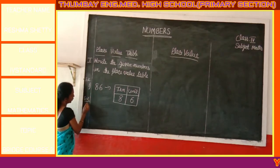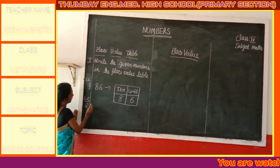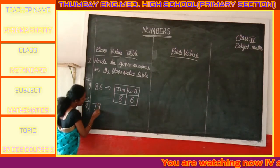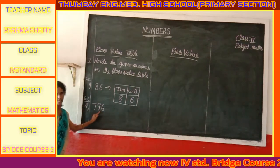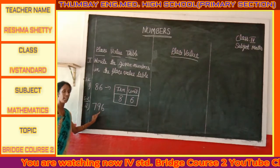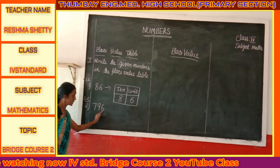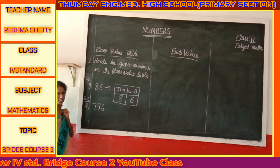Let us see one more example. Example 2. Now I have written here 796. It is 796. We have 3 digits.